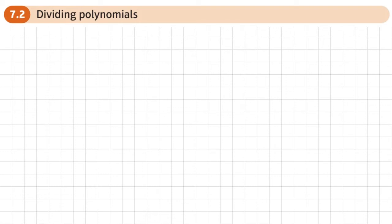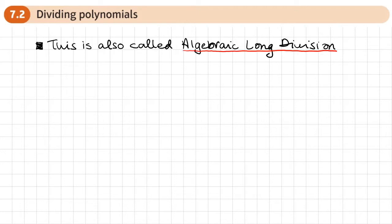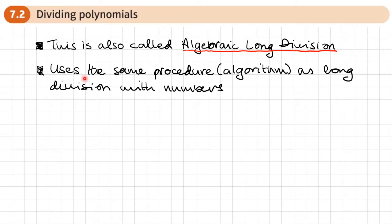This is the second section of chapter 7 on algebraic methods, and this section is dividing polynomials — also called algebraic long division. This uses the same procedure, or algorithm, as long division with numbers. So if you understand number long division, you should be able to answer questions with algebraic long division. It just takes practice, and after you've practiced for a while, you'll be able to do these questions without really having to think — you just do the algorithm.